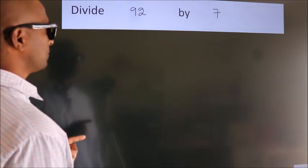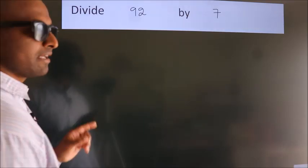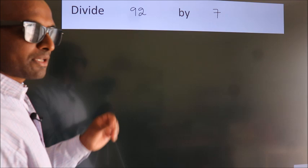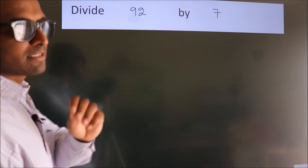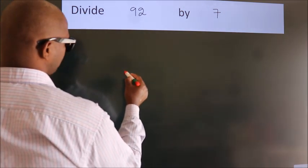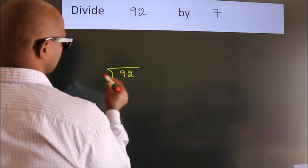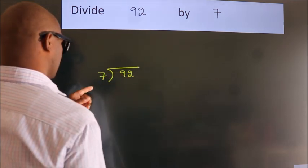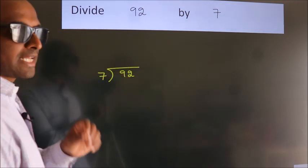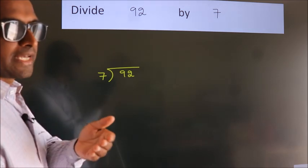Divide 92 by 7. To do this division, we should frame it in this way: 92 here, 7 here. This is your step 1. Next.